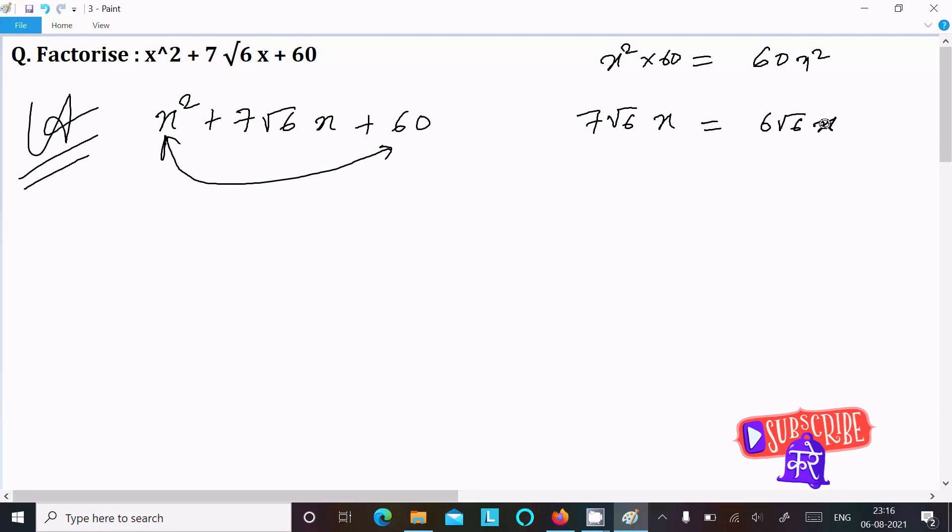So here writing 6√6x + √6x. If you add this, that comes 7√6x. Now here writing 6√6x into √6x, so this comes 6×6, that becomes 36x².